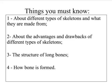Things you must know from this lesson in order to answer questions when you come into the classroom. The first thing is about the different types of skeletons and what they are made from. The second thing is the advantages and drawbacks of the different types of skeletons. The third thing is the structure of the long bones, and the fourth thing is how bones actually form.